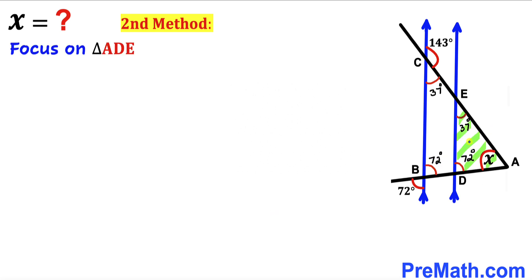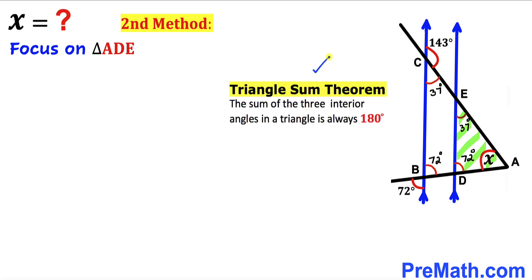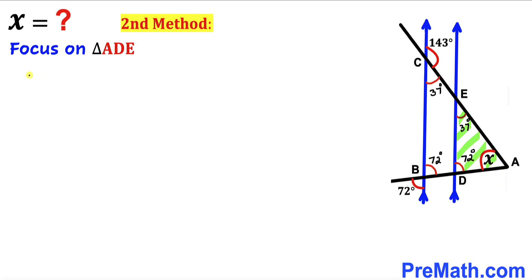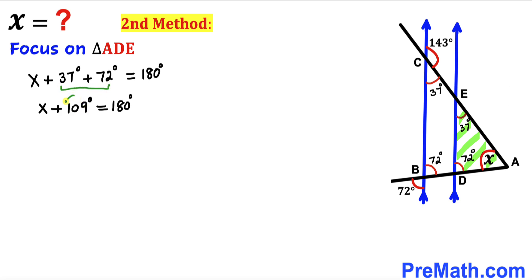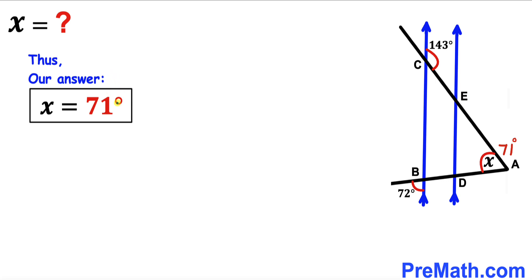Now let's focus on the tiny triangle ADE and recall the triangle sum theorem once again. The sum of all three interior angles in triangle ADE must equal 180 degrees. So angle X plus 37 degrees plus 72 degrees equals 180 degrees. Combining these terms we get X plus 109 degrees, and subtracting 109 degrees from both sides, angle X turns out to be 71 degrees as well. Thus in both scenarios our angle X is 71 degrees — that's our final answer. Thanks for watching and please don't forget to subscribe for more exciting videos.